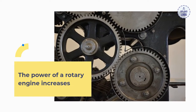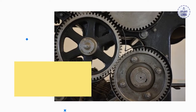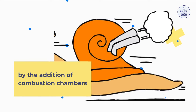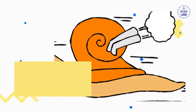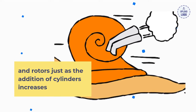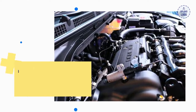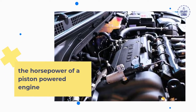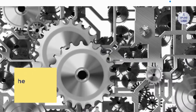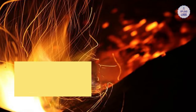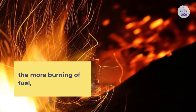The power of a rotary engine increases by the addition of combustion chambers and rotors, just as the addition of cylinders increases the horsepower of a piston-powered engine. The stronger the engine, the more burning of fuel.